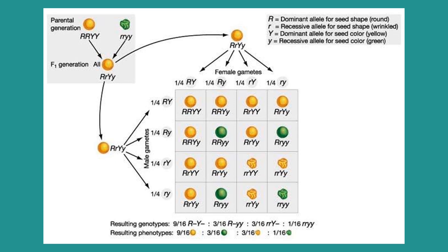Shape of the seed is represented by the letter R — uppercase R for round-shaped seed and lowercase r for wrinkled-shaped seed. The other trait is represented by the letter Y — uppercase Y for yellow color of the seed and lowercase y for green color of the seed. Based on the results of the F1 generation, all of the offspring are heterozygous for round shape and yellow color. When the first filial generation self-fertilizes, following the FOIL method, the gametes are: round yellow seed, round green seed, wrinkled yellow seed, and wrinkled green seed.